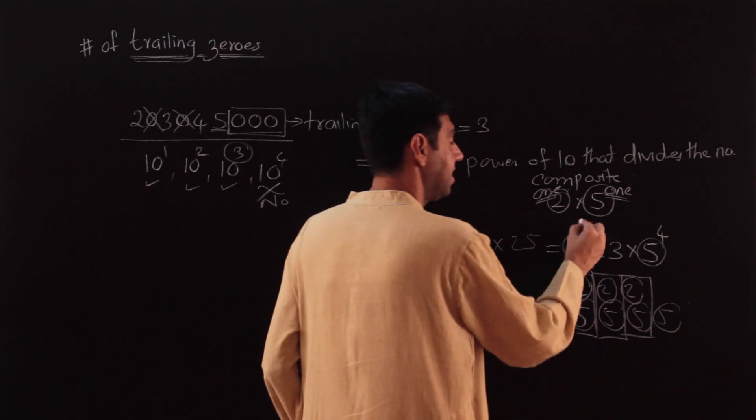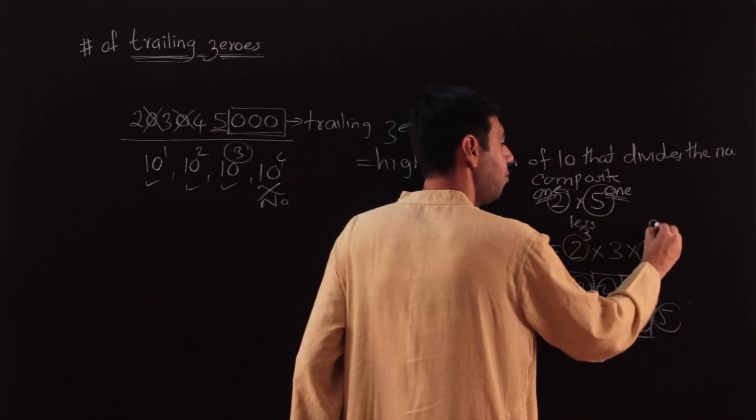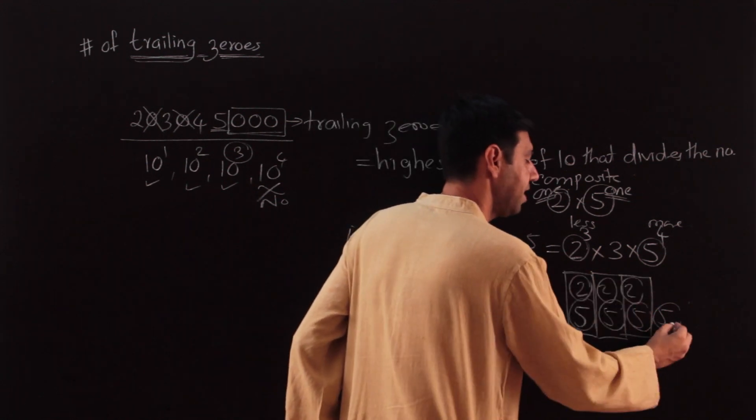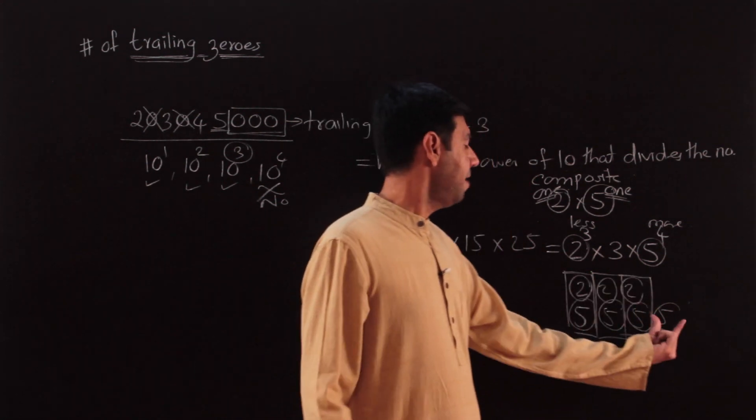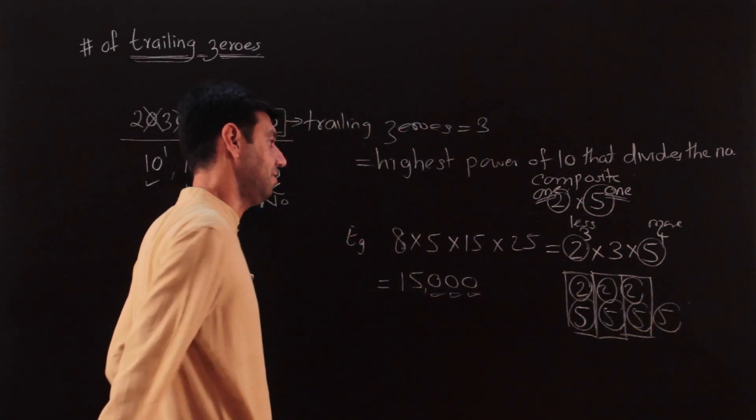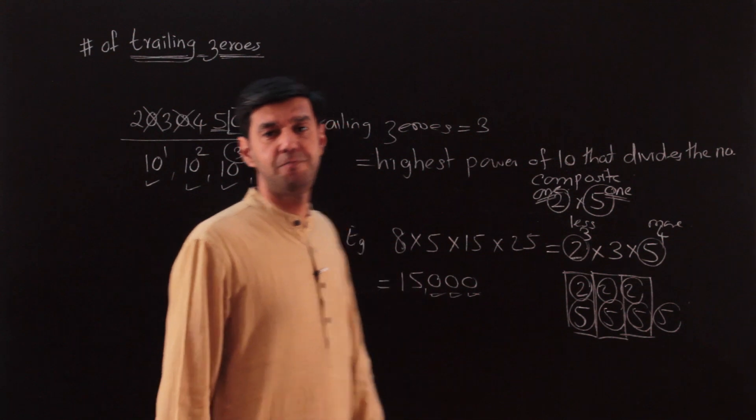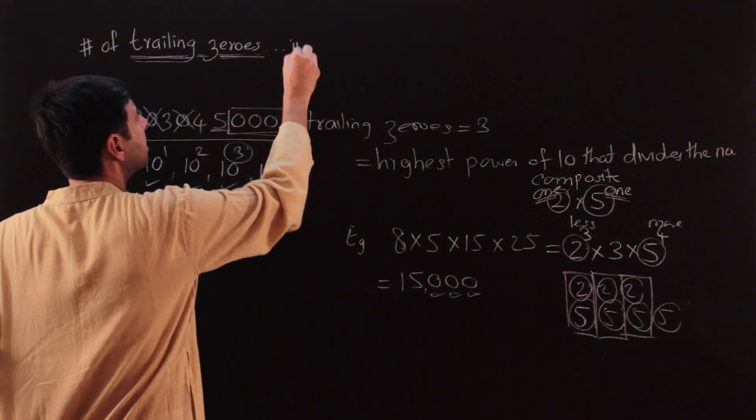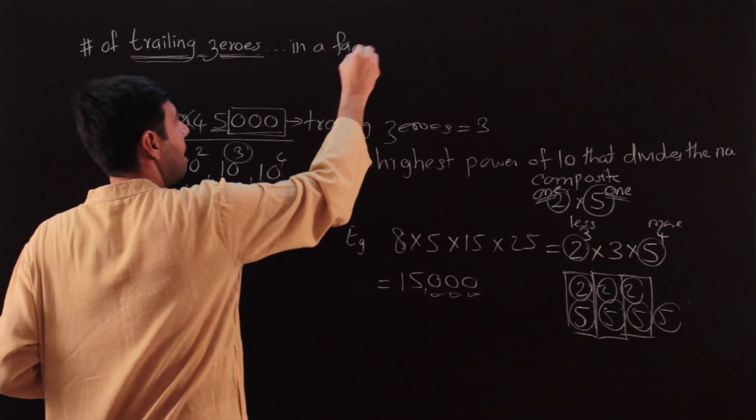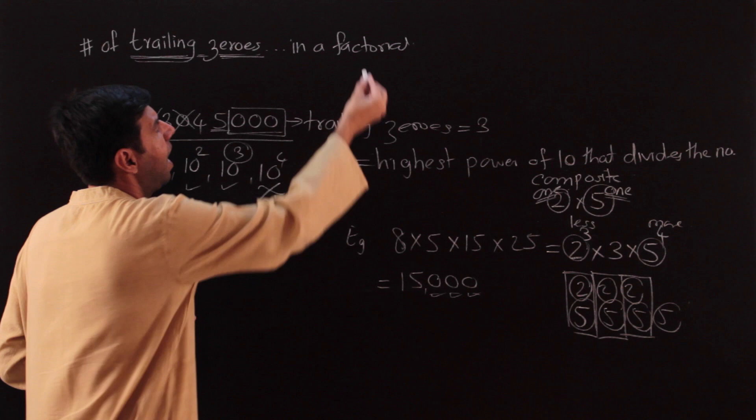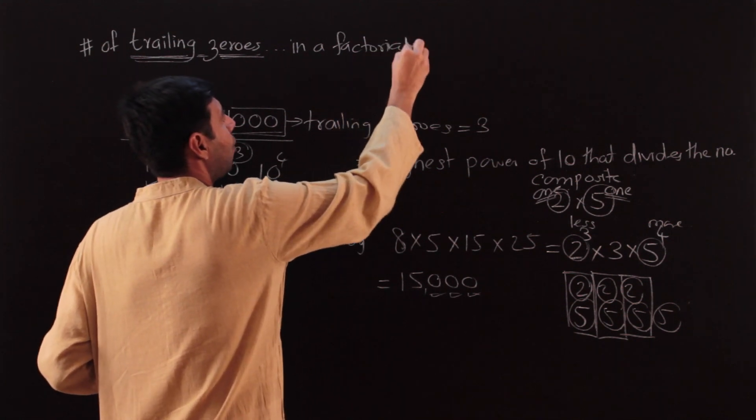These are less, these are more, so the lesser one is going to determine how many zeros will be formed. The extra 5 that is left over, there is no 2 along with it, so hence I get these three zeros. This is what we will be doing, mostly in a factorial. While here I explained it with just random products, our arena or the number involved in our questions will be that of a factorial.